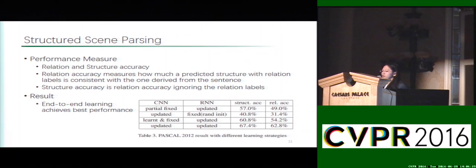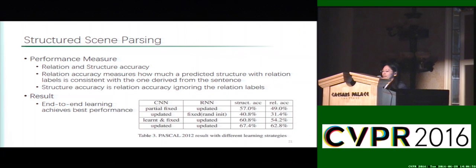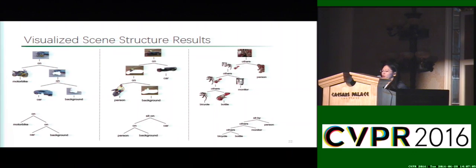The second experiment is on structured scene understanding. We report both relation accuracy and structure accuracy. Relation accuracy measures how much a predicted structure with relation labels is consistent with the parse derived from sentences. Structure accuracy is relation accuracy ignoring relation labels. We achieve 37.4% in terms of structure accuracy and 32.8% in relation accuracy, and end-to-end learning achieves the best performance. Here are some visualized results of our scene structure parsing.